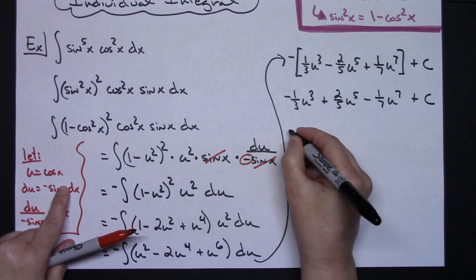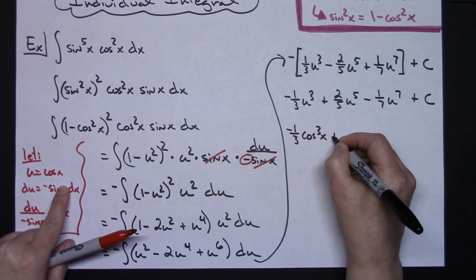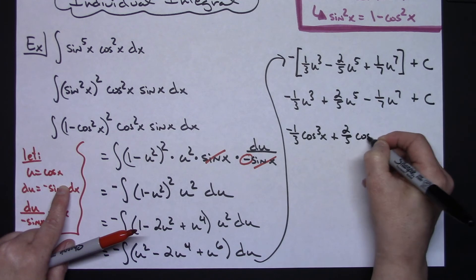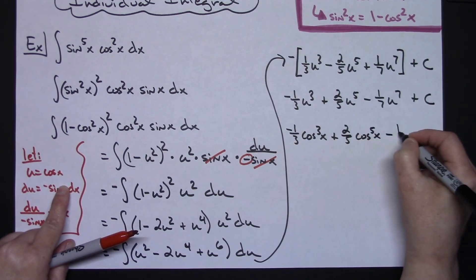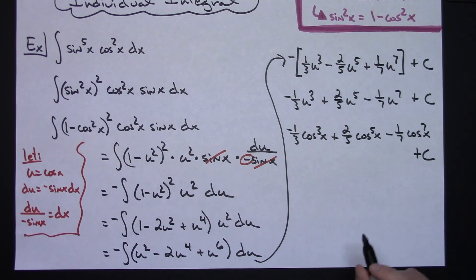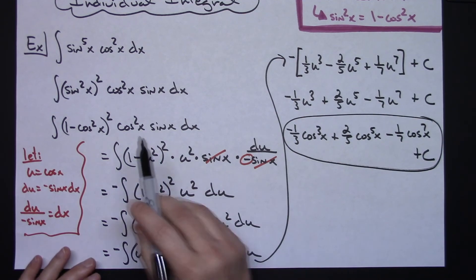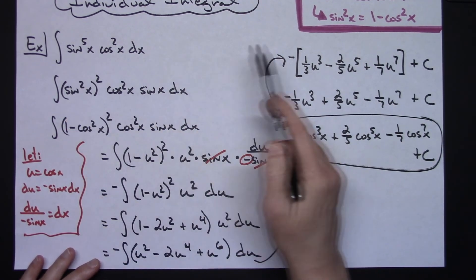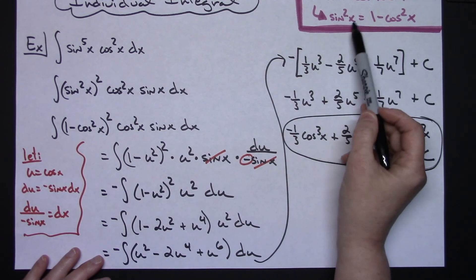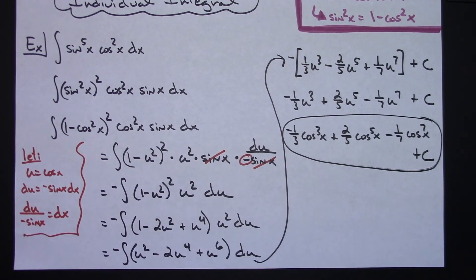The last step is to replace u with cosine x in each term, so we end up with negative one-third cosine x to the third plus two-fifths cosine x to the fifth minus one-seventh cosine x to the seventh, plus C. Straightforward integration once you get started — having that odd power of sine lets you break out a sine squared x for a nice substitution, which leads to the polynomial you integrate directly. Thanks for watching; if the videos are helping, don't forget to subscribe and share with your friends.